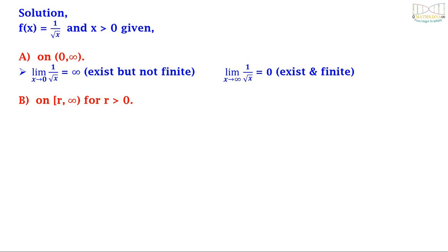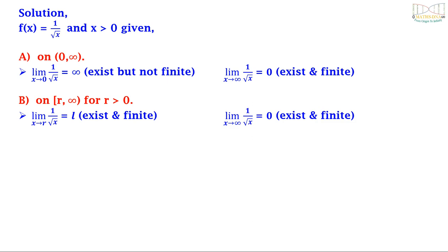Option B says on closed [r, ∞) for r > 0. This gives us: limit as x tends to r of 1/√x equals some finite number L, which exists and is finite; and limit as x tends to ∞ of 1/√x equals 0, which is also existing and finite. Therefore the function is uniformly continuous on closed [r, ∞) for r > 0.